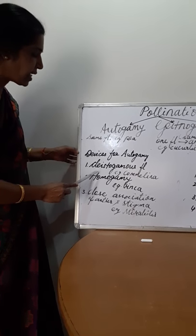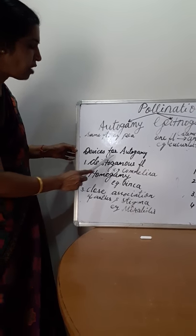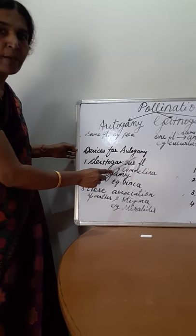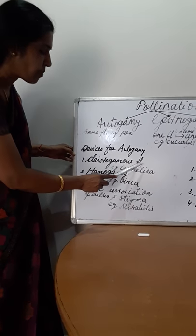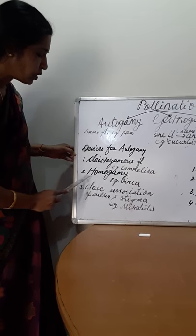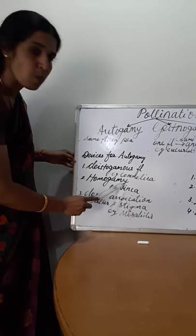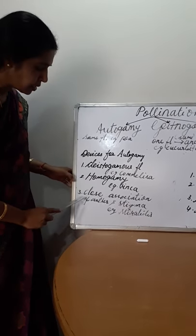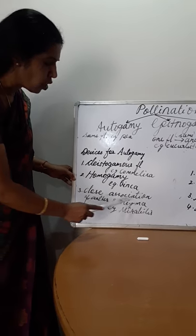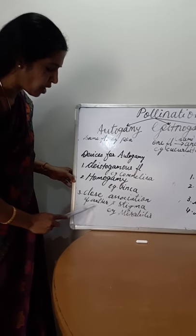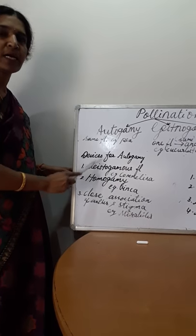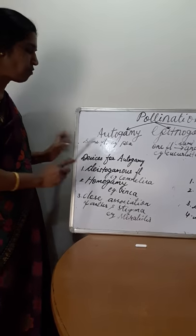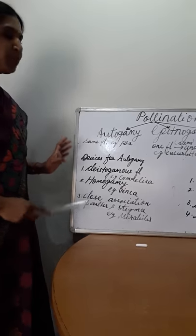These are the three devices for autogamy or self pollination. One is kleistogamous flowers, two is homogamy, and third is close association of anther and stigma. These are the devices of autogamy.